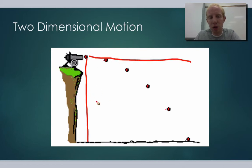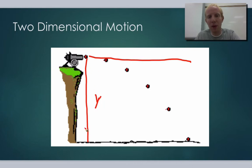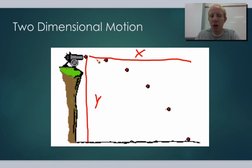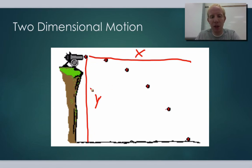We'll call this the y direction, like we do in math — how far up or down it went. And we'll call this the x direction — how far to the side it went. When we're doing any type of projectile problem or any problem in two dimensions, we treat each motion separately, each dimension separately. We look at the y direction separate from the x direction.